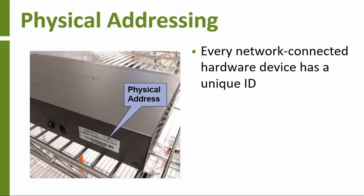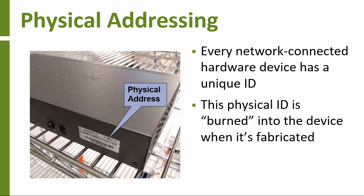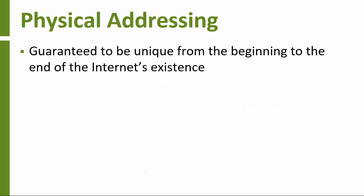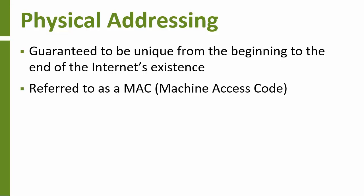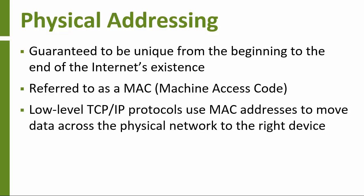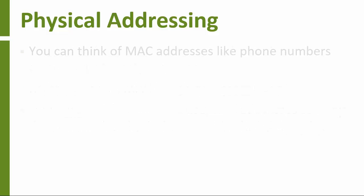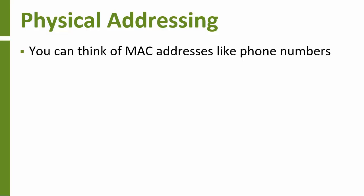Any device connected to a TCP-IP network has a physical address, a unique number that identifies it. That unique number is burned into the device at the factory and is guaranteed to be unique across all devices ever connected to the internet. The technical name for that unique number is a machine access code, or MAC address. On a LAN, the low-level TCP-IP protocols use these physical addresses to move data across the physical network and make sure it's received by the right device. The physical MAC addresses are used similarly to how phone companies use phone numbers.